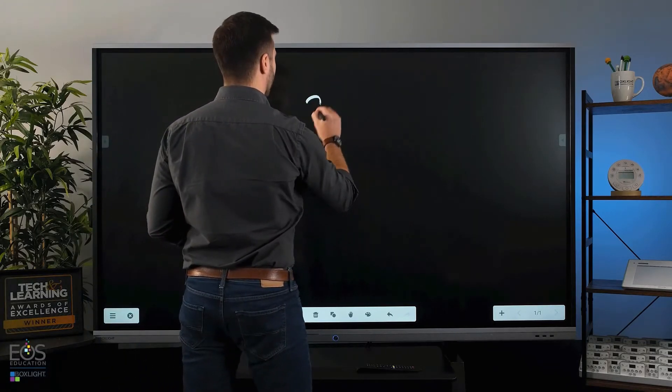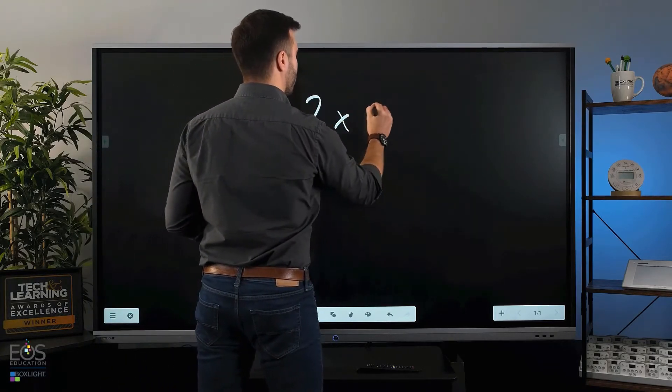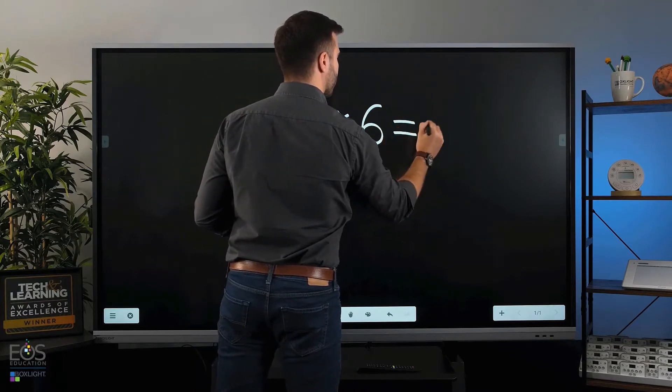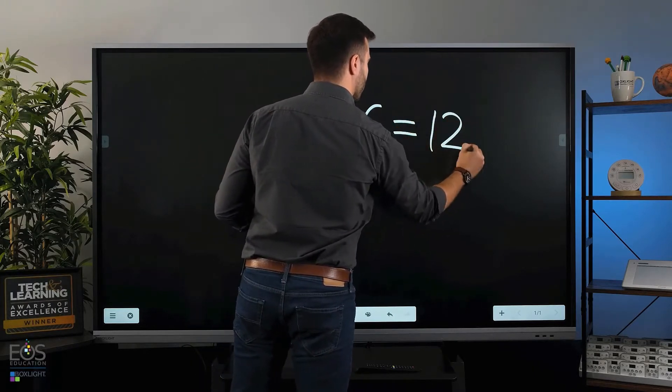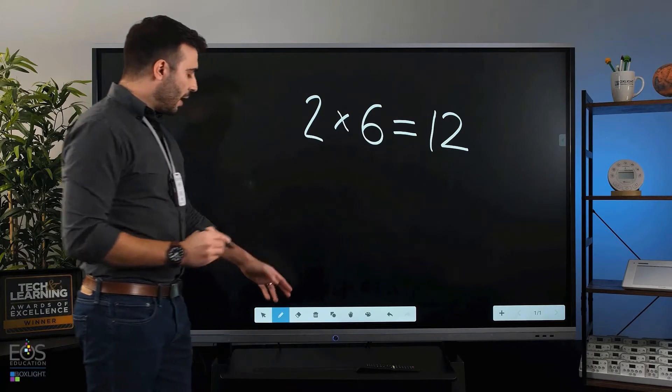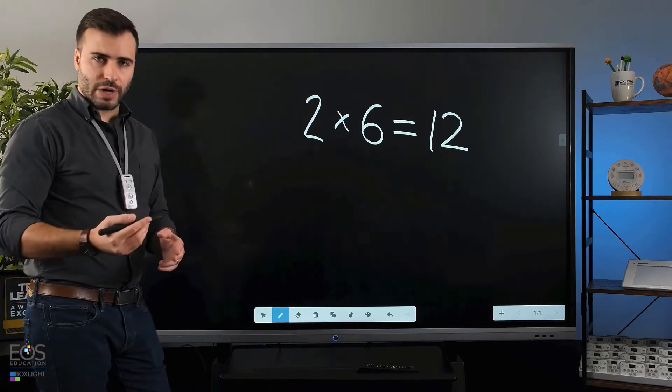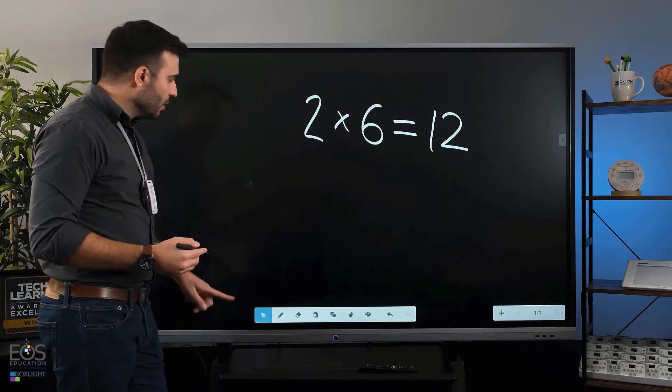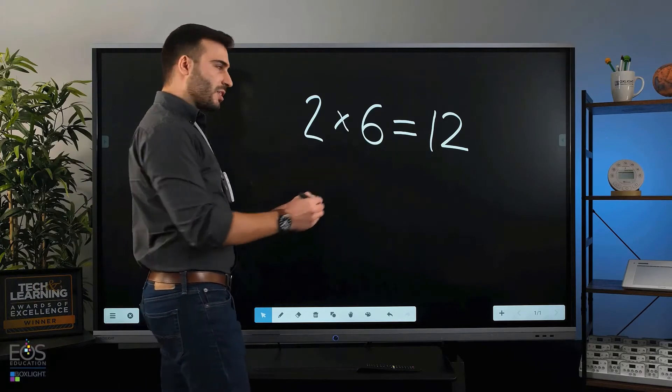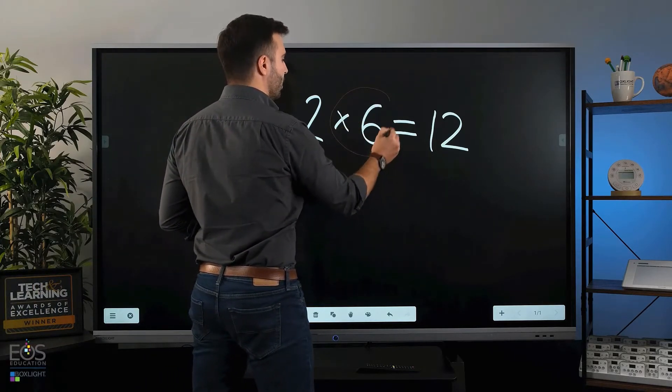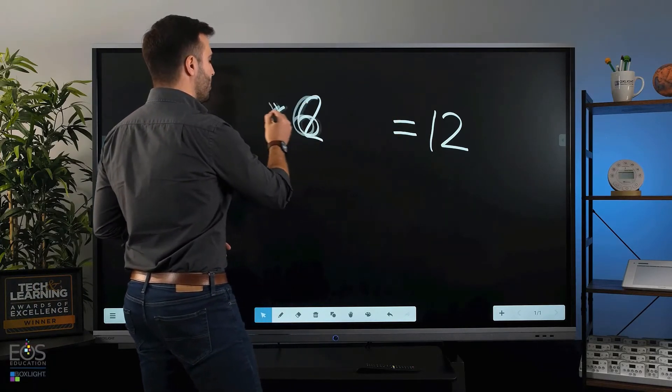So let's give that a try here. I'm in the pen tool now. In order to write, if I select this arrow here, I'll actually be able to select any of the strokes that I've just made with my pen and move those around as I want.